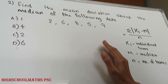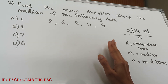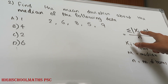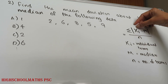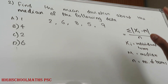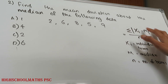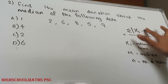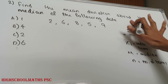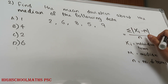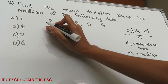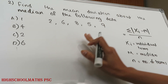That is 21%. Second question: find the mean deviation about the median of the following data. The equation is sigma modulus of (x_i minus m) by n, where n is the number of terms and m is the median. First, arrange the data in ascending order.